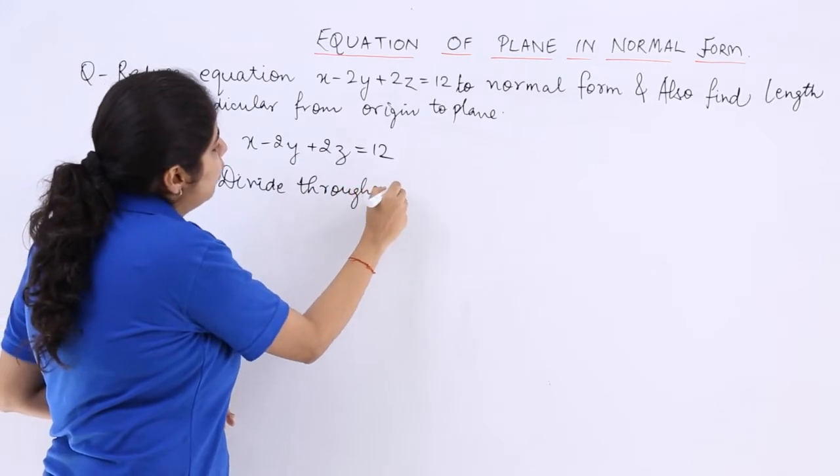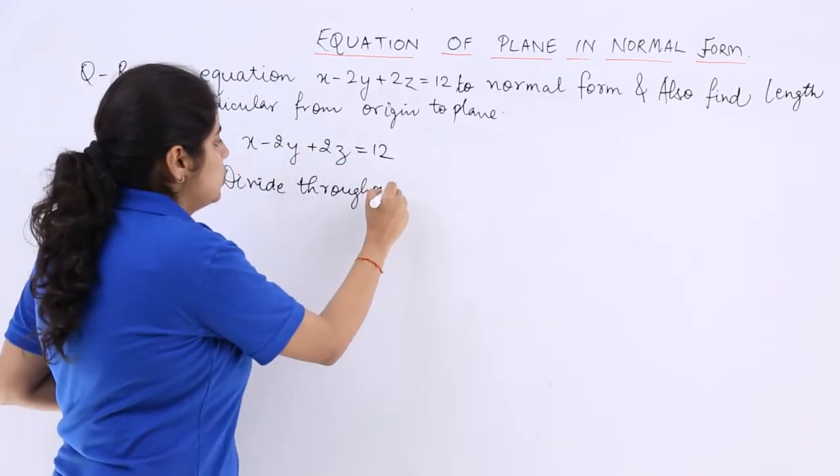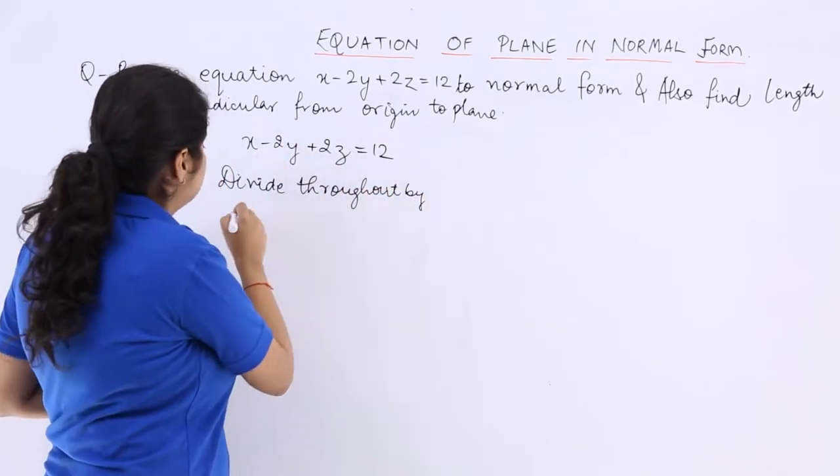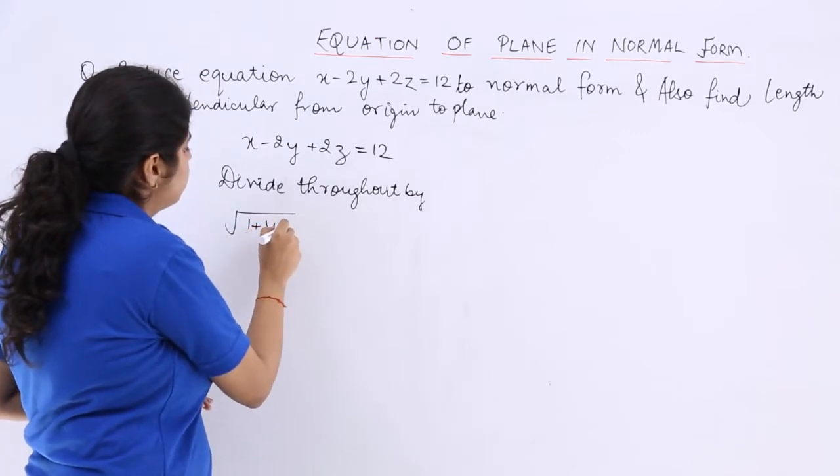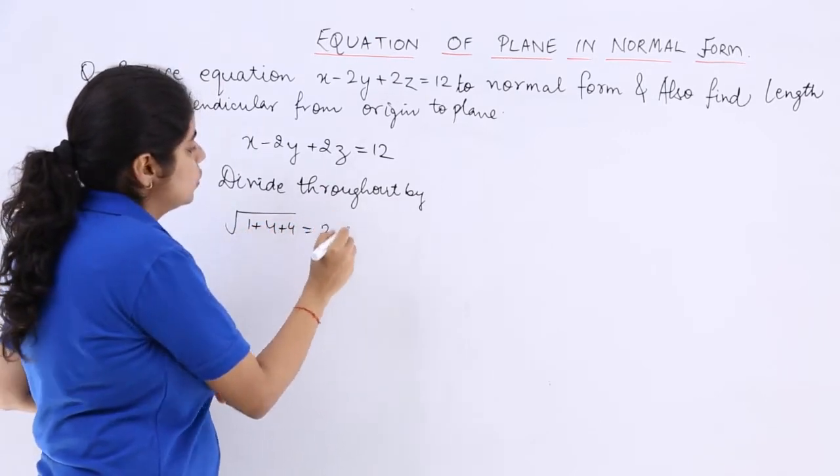Throughout means both the left hand side and the right hand side you have to divide by root of 1 plus 4 plus 4, which is 3 units.